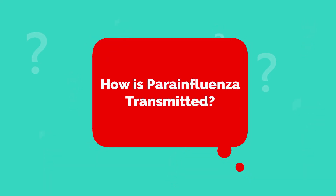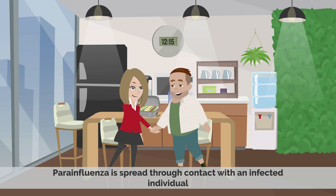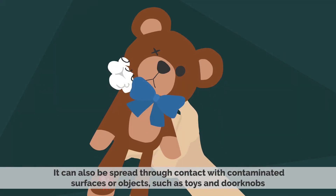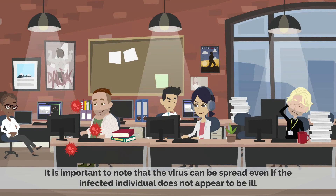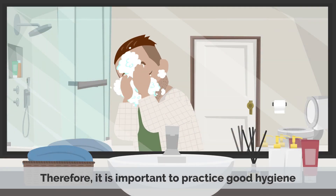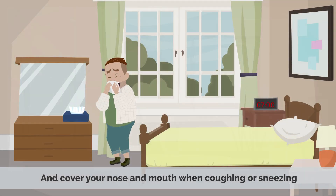Parainfluenza is spread through contact with an infected individual or through the air when an infected individual coughs or sneezes. It can also be spread through contact with contaminated surfaces or objects such as toys and doorknobs. It is important to note that the virus can be spread even if the infected individual does not appear to be ill. Therefore, it is important to practice good hygiene and cover your nose and mouth when coughing or sneezing.